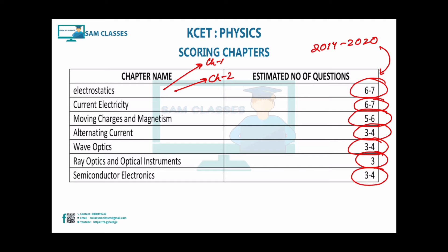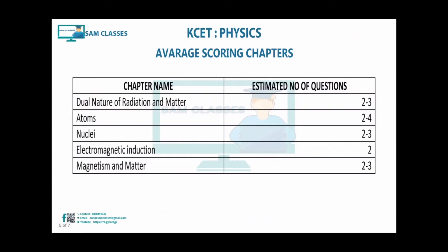These topics have above 3 weightage. The 12th portion dominates, contributing almost 45 to 50 marks, while 11th portion is around 10 to 15 marks. Give more emphasis on 12th topics. Among the scoring topics, questions are simple concept-based, some are formula-based, and some require thinking. Very important, so take care of this.